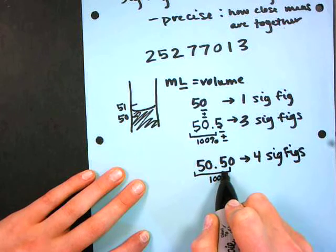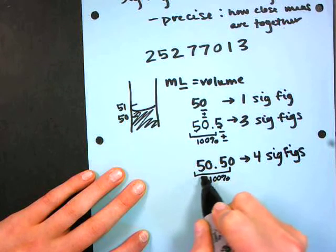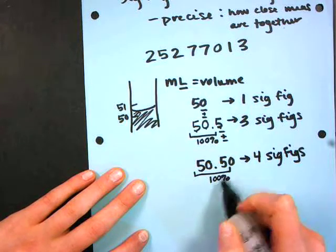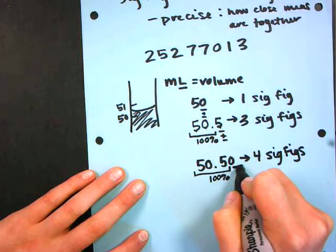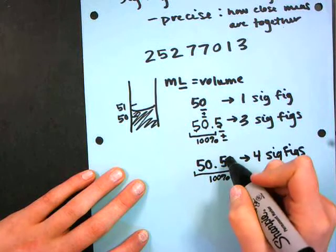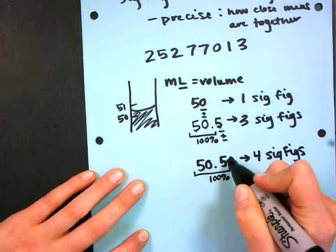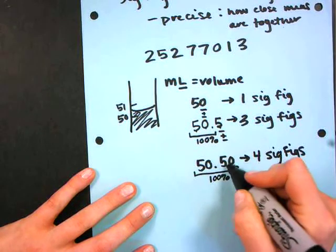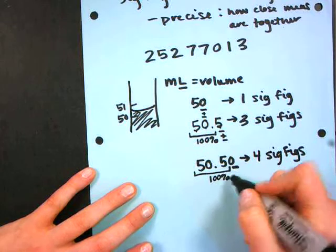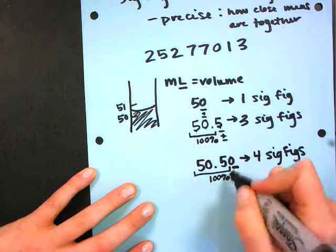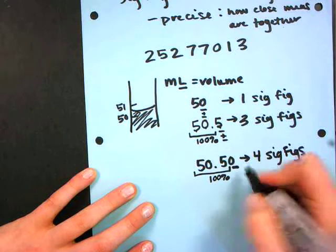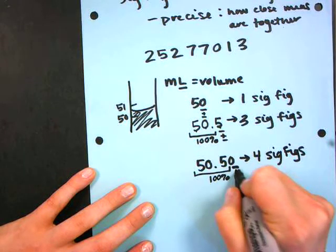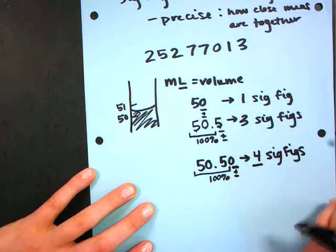So I'm saying 100% I have 50.5 milliliters in this case, and the zero at the end isn't changing that. The zero at the end isn't altering my number at all, but it is adding to the precision. And because this zero at the end signifies that I was somehow able to get more precise with my measurement, it becomes significant too. So I have four sig figs.